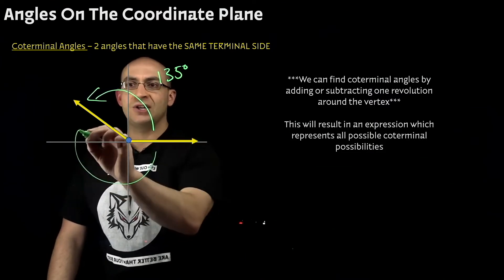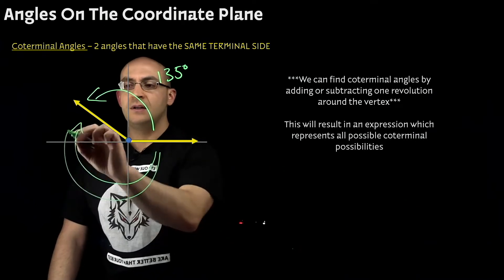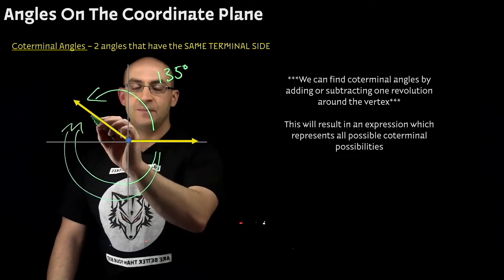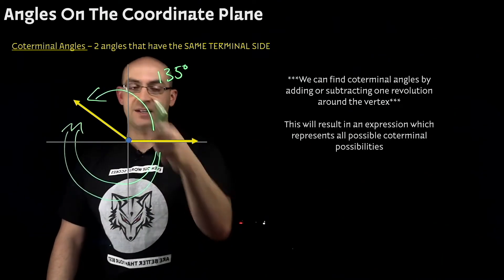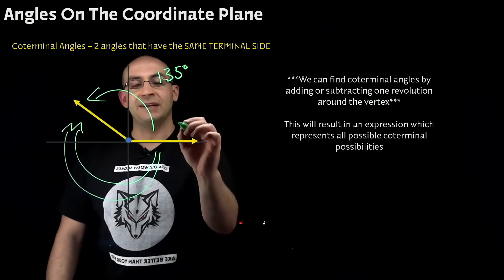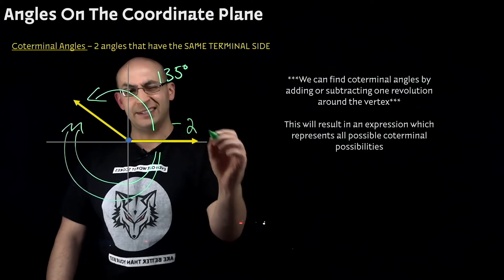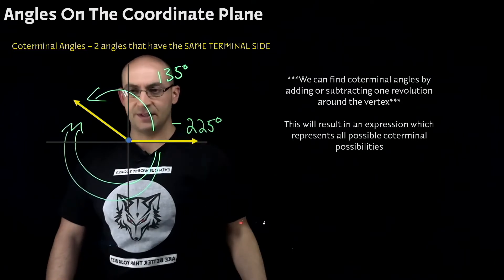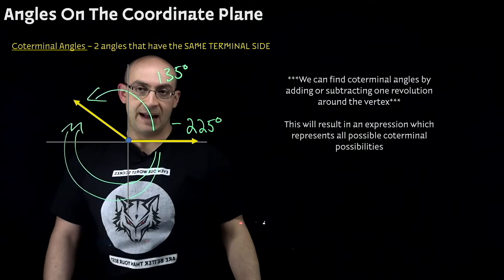that means its coterminal angle is going to go negative the same amount of distance to make 360 all around. So I would do 360 minus 135 and I'm going to have a negative 225 degrees because the two of these together would make a 360 degree angle.